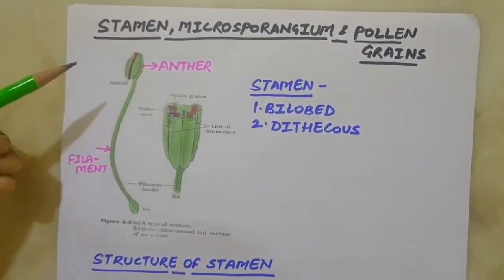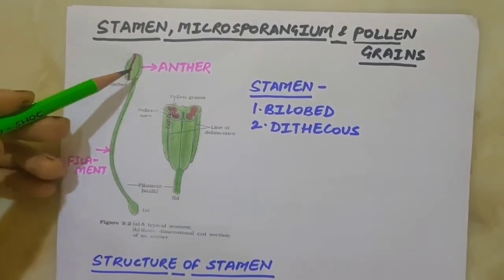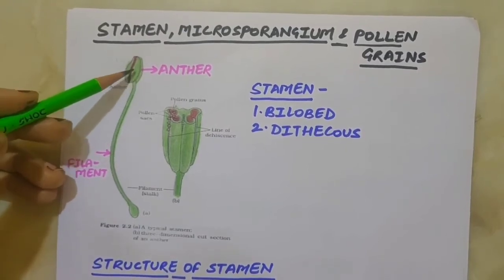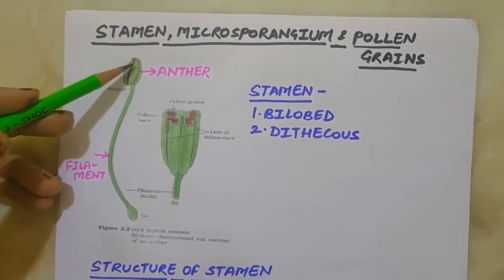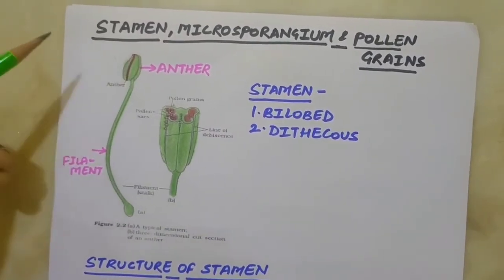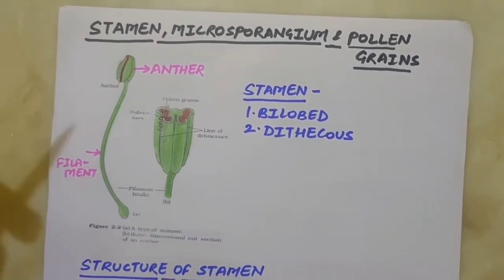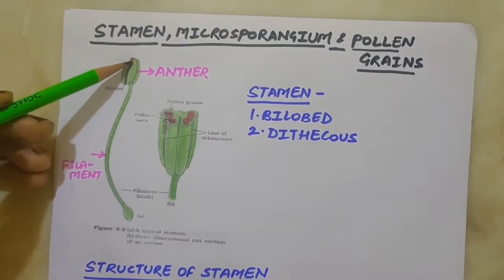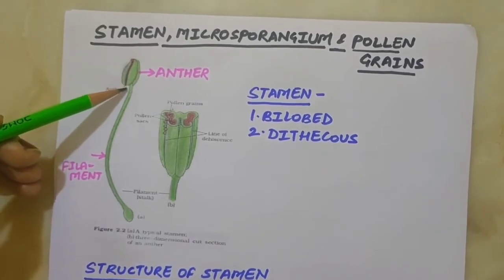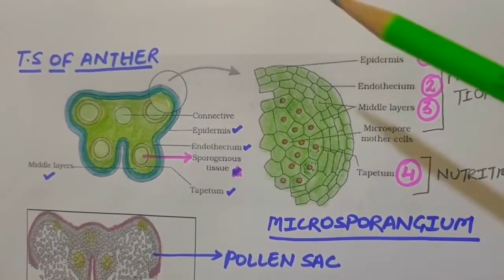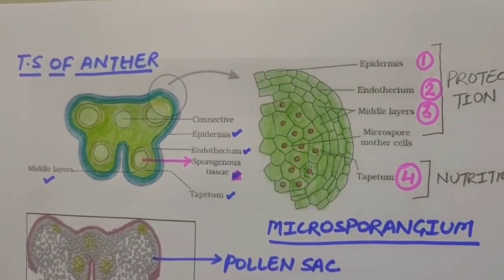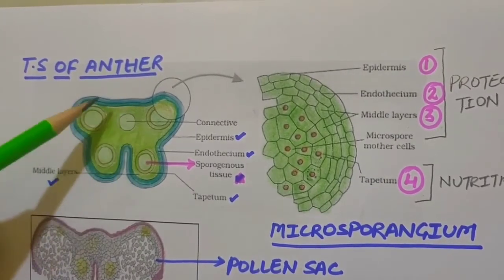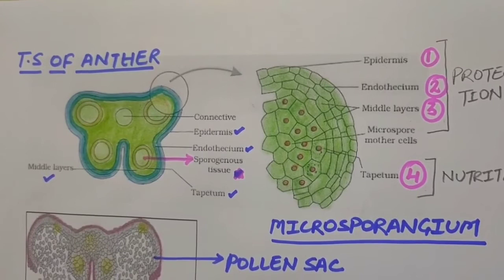The stamen has a long slender stalk called the filament and a bilobed structure called the anther. The anther is a bilobed structure — you can see these two lobes. In each lobe, there are two compartments, and a longitudinal groove runs lengthwise. If we look at the TS of the anther, it is a four-sided or tetragonal structure consisting of four microsporangia located at the corners, two in each lobe.